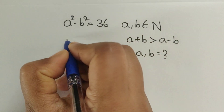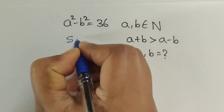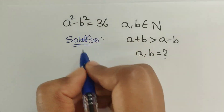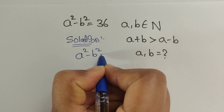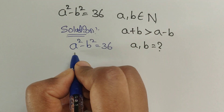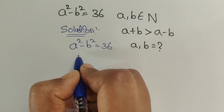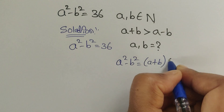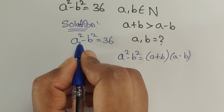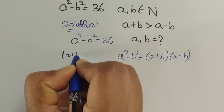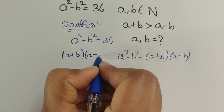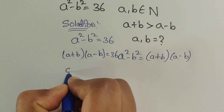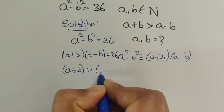Let's solve this. The question is a squared minus b squared equals 36. We know the formula: a squared minus b squared equals a plus b times a minus b. So in place of a squared minus b squared we write a plus b times a minus b equals 36.